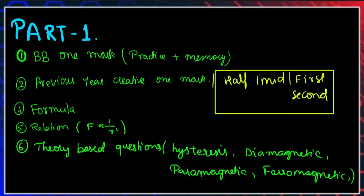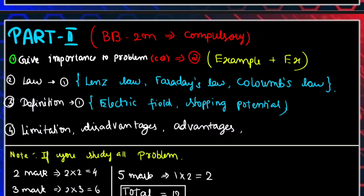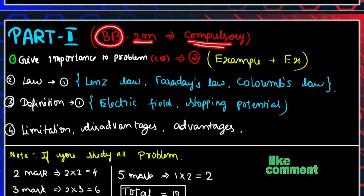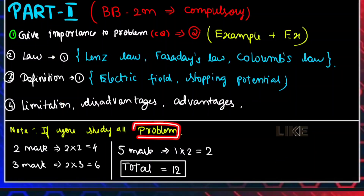There are also theory-based questions about retentivity. Topics like soft magnetic material, magnetic material types — diamagnetic, paramagnetic, and ferromagnetic — are important. These cover domain theory. From this topic, you can get a minimum of 2 problems worth 4 marks maximum.